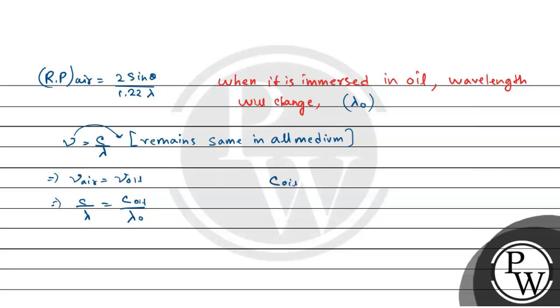Now, c oil equals c by n, where n is the refractive index of the oil. So c oil equals c by 2, because refractive index of the oil is 2. So, c by lambda equals c by 2 divided by lambda o. Therefore, lambda in oil equals lambda by 2.